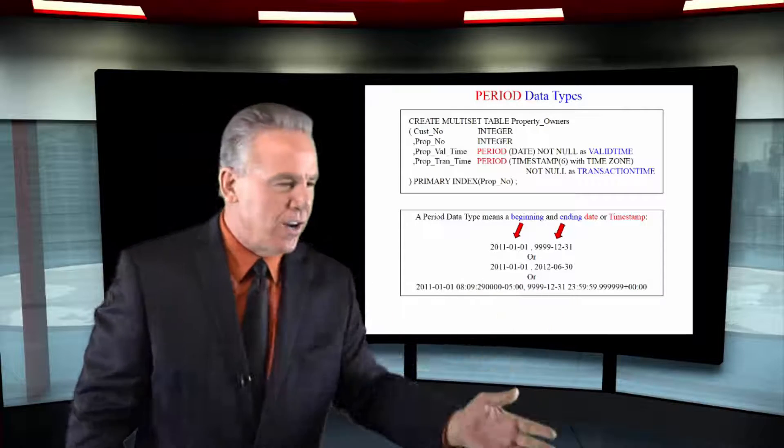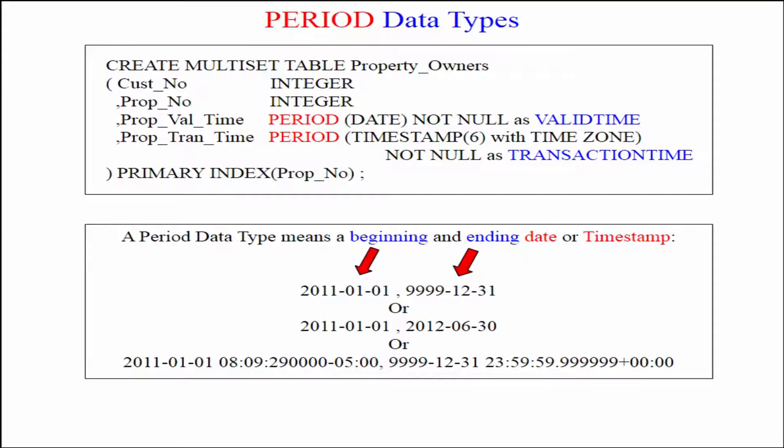So as you can see here, we've got a beginning date and then we've got 9999-1231. That means that's going to last forever. So it has not ended yet.